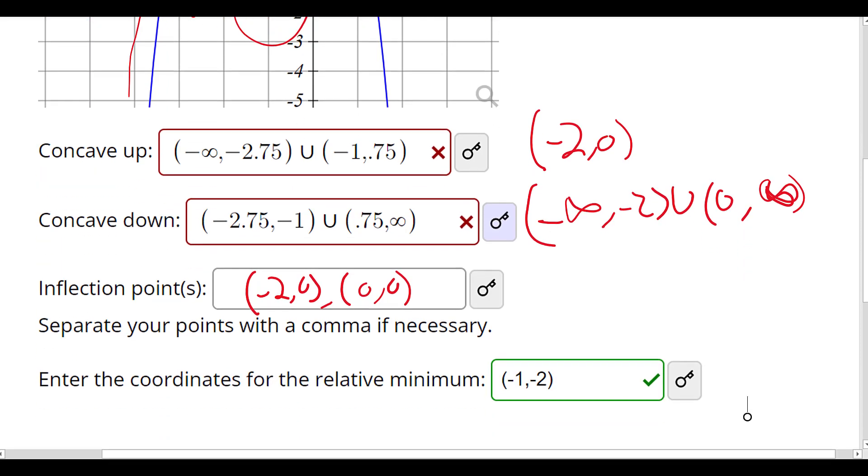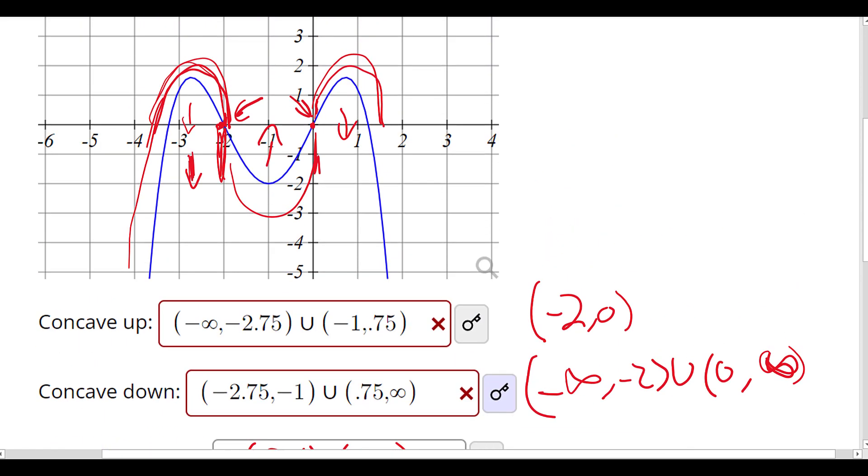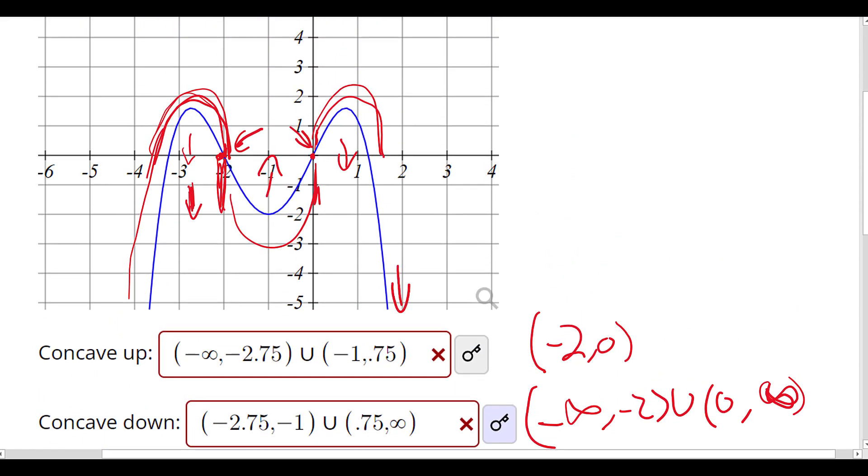The last question is to find the coordinates for the relative minimum. Obviously it goes down forever here and here, but the relative minimum is here at negative 1, negative 2.